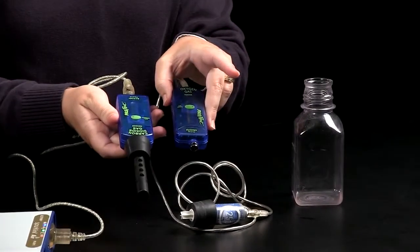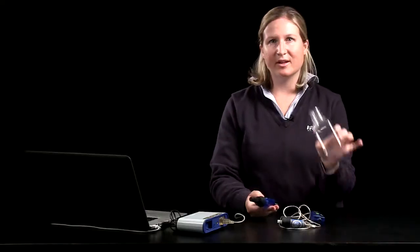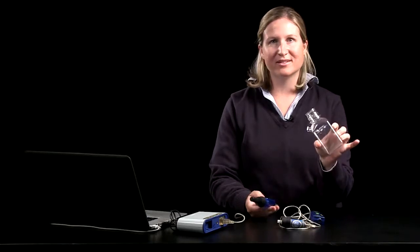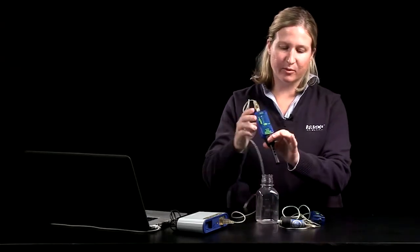The front of each of the sensors has a green calibration button, and you'll want to calibrate using an empty sampling bottle. Each of the sensors comes with the sampling bottle. You can plug the sampling bottle with the sensor.